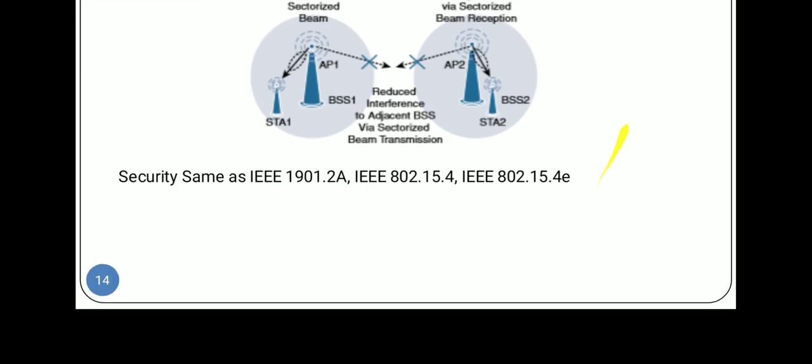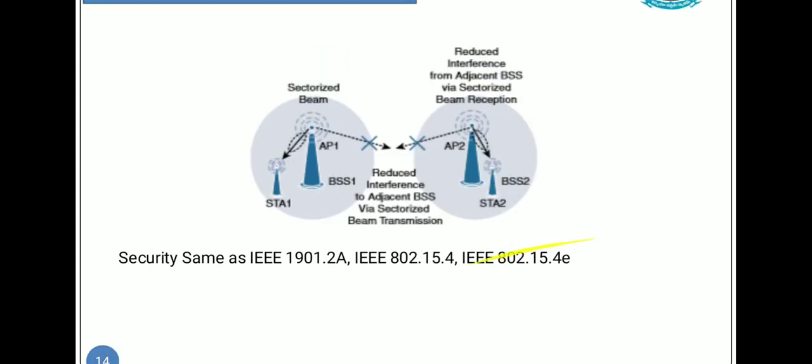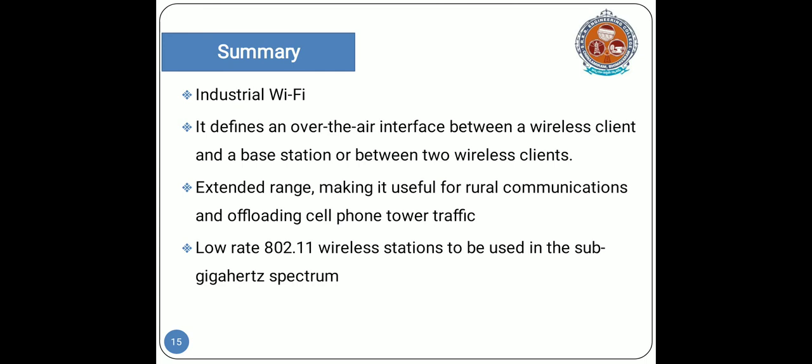For security, IEEE 802.11ah follows the same standards as IEEE 1901.2a, IEEE 802.15.4, and 802.15.4e. In summary, this standard is designed for industrial Wi-Fi and defines the over-the-air interface — the connectivity between a wireless client and a base station or between two wireless clients. It has extended range making it useful for rural communication, thereby decreasing load on cell phone tower traffic, and offers low-rate 802.11 wireless stations operating in the sub-GHz spectrum. Thank you.